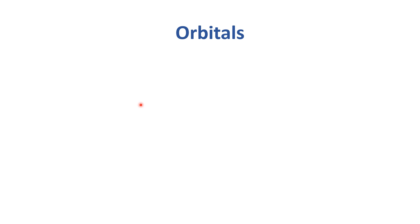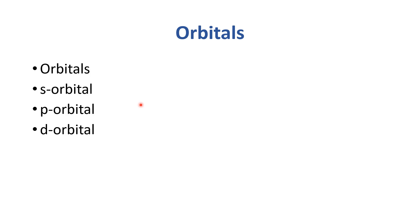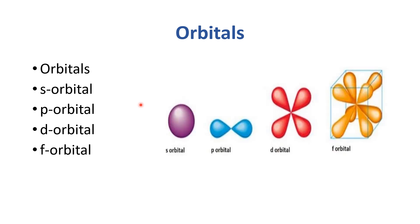Orbitals are of four types: s orbitals, p orbitals, d orbitals, and f orbitals. S orbitals are spherical in shape, p orbitals are dumbbell-shaped, d orbitals are double-dumbbell shaped, and f orbitals are of complex shape.